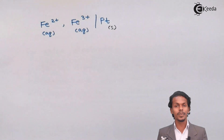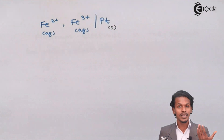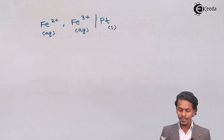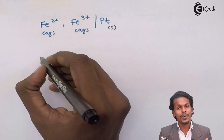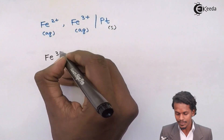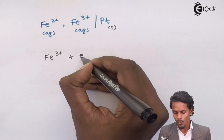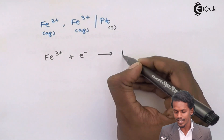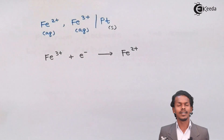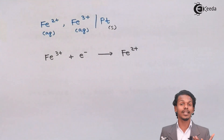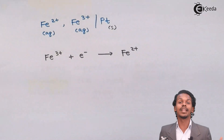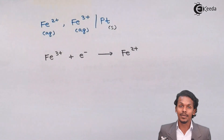This kind of electrode — dipped in a solution containing the same substance in different valencies — is called a redox electrode. The half-cell reaction is: Fe³⁺ + e⁻ → Fe²⁺. This is how we represent the half-cell reaction for a redox electrode.